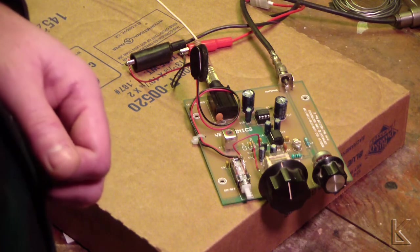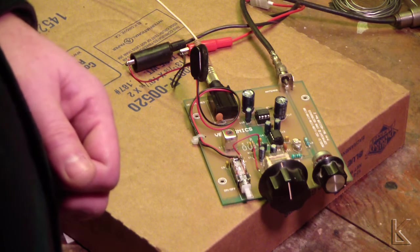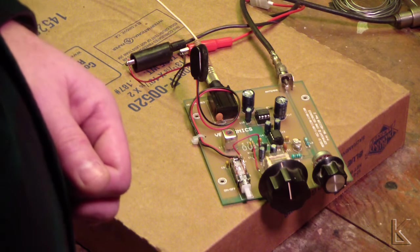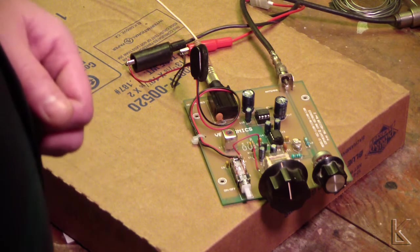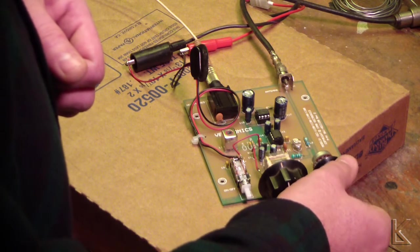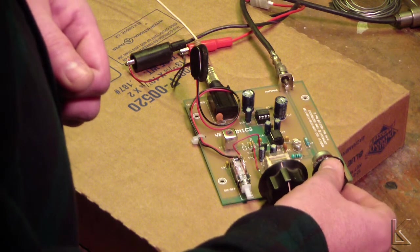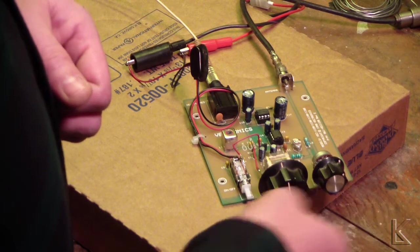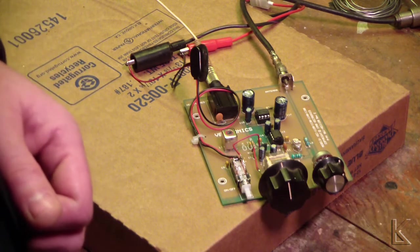There's some JT-65 signals. There we go. Well, there you go. The Vectronix 40 meter receiver.